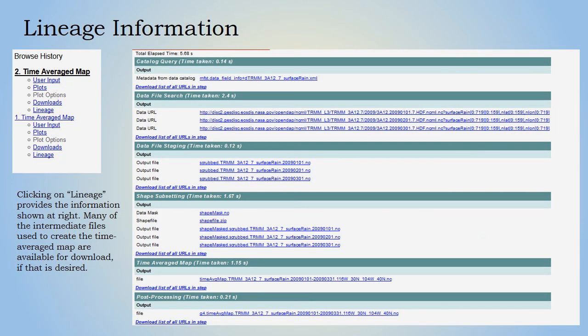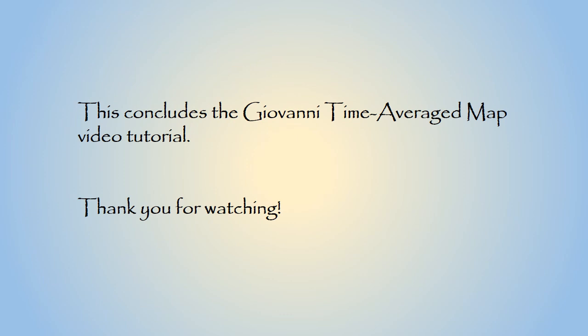Clicking on Lineage in the browse history menu provides additional information. Many of the intermediate files used to create the time average map output are available for download if desired. This concludes the Giovanni time average map video tutorial. Thank you for watching.